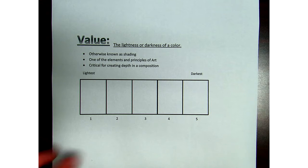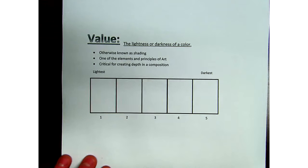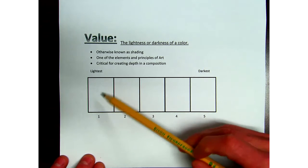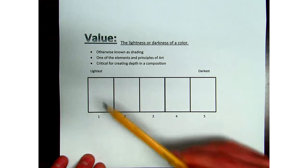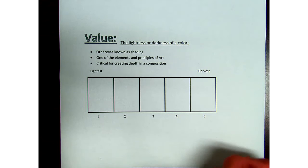All right, so whenever we are creating a value scale, we never want to, when we have white paper, put anything in the lightest area here in the first box, because the white of the paper is going to be the lightest value that we're going to have.